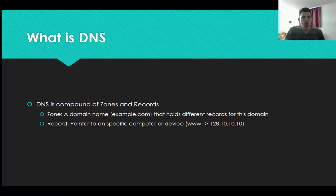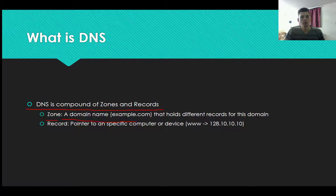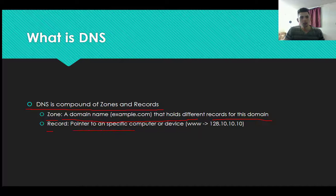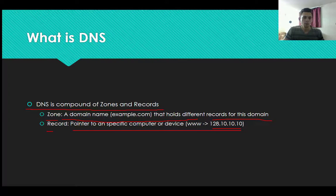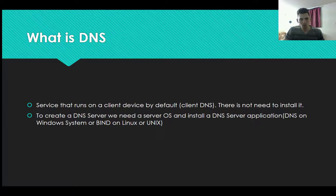DNS is composed of zones and records. What is a zone? A zone is a domain name like example.com that holds all the different records for that domain. What is a record? A record is a pointer to a specific computer or device — for example, 'www' is a pointer to 128.10.10.10.